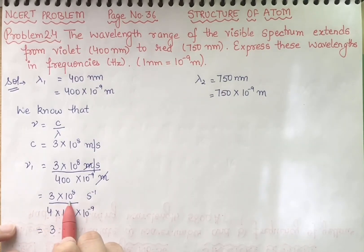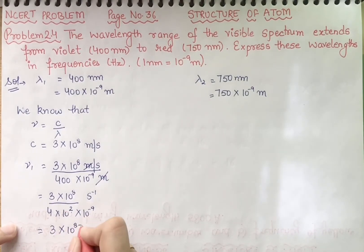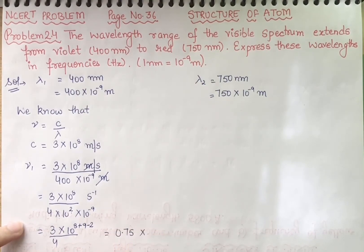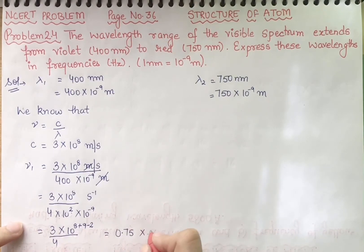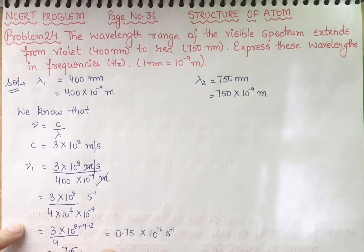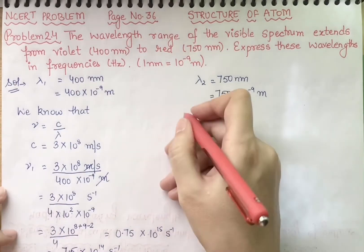Combining the powers: 3 into 10 raised to power 8 plus 9 minus 2, divided by 4. When you divide 3 by 4 you get 0.75, and 8 plus 9 minus 2 gives 10 raised to power 15 per second. Simplifying further by carrying one factor of 10, this becomes 7.5 into 10 raised to power 14 per second. This is our nu one.